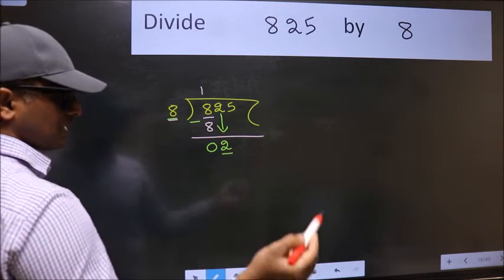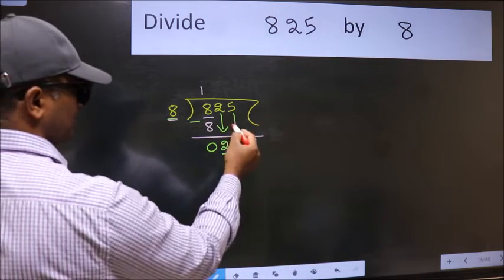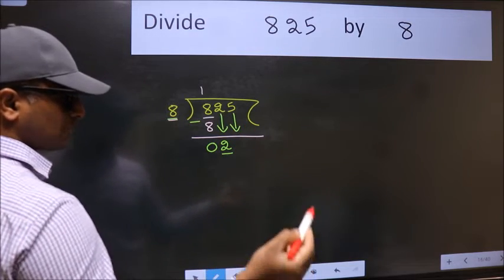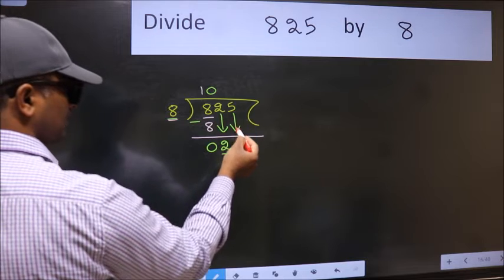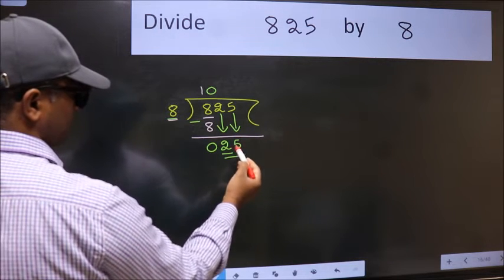So we should bring down the second number. The rule to bring down the second number is to put 0 here. Then only we can bring this number down. So 25.